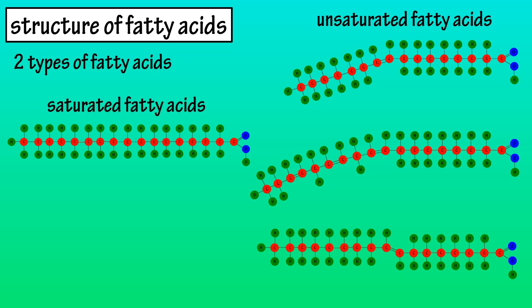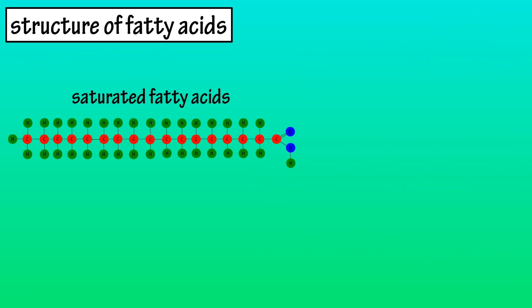There are two types of fatty acids: saturated fatty acids and unsaturated fatty acids, which include monounsaturated, polyunsaturated, and trans fatty acids.